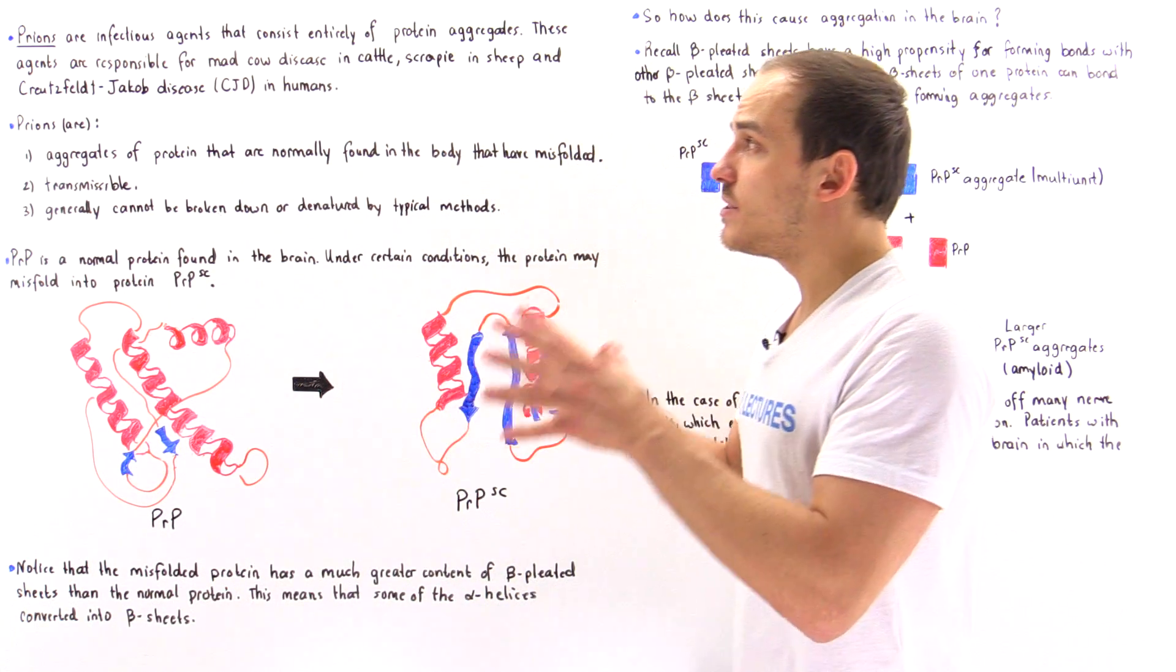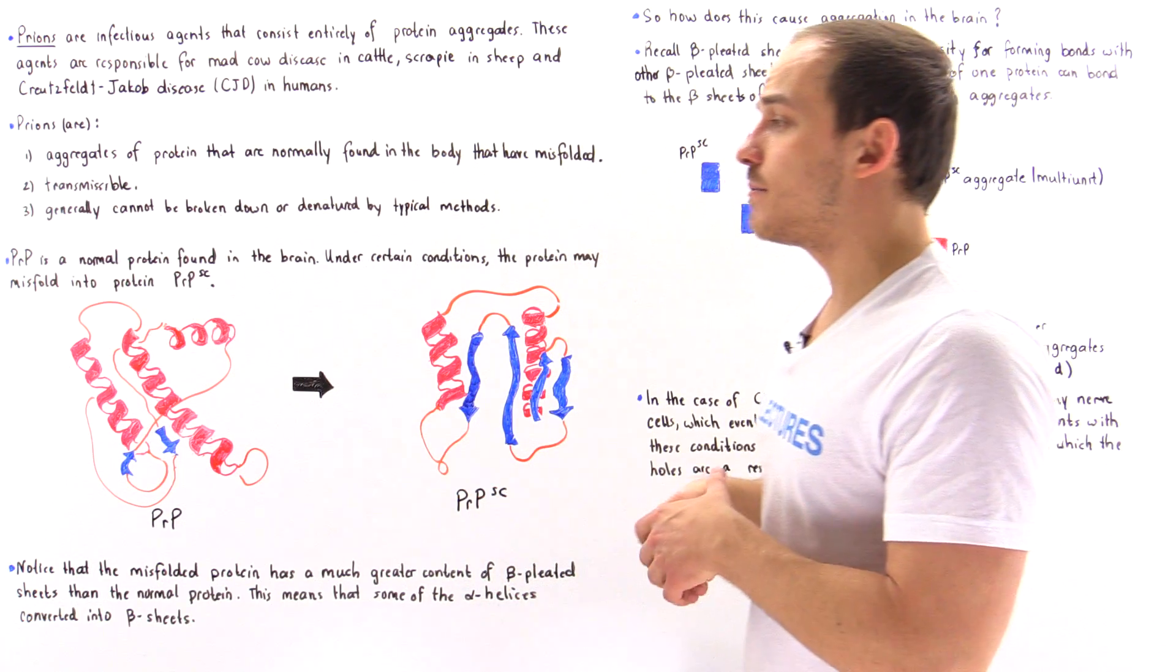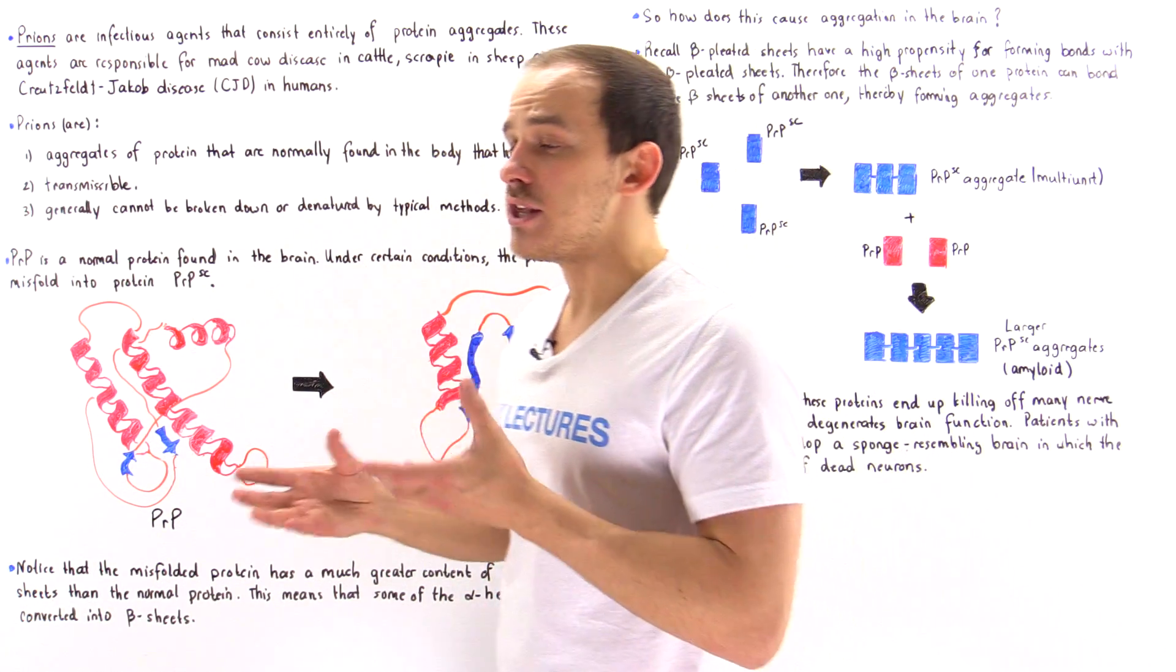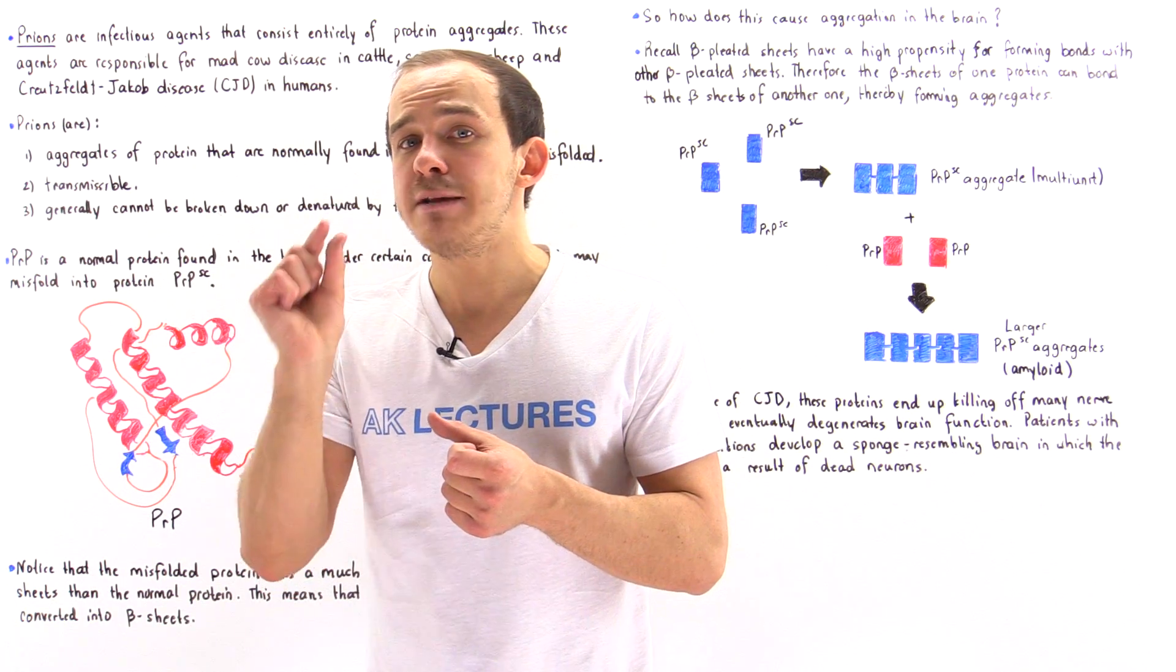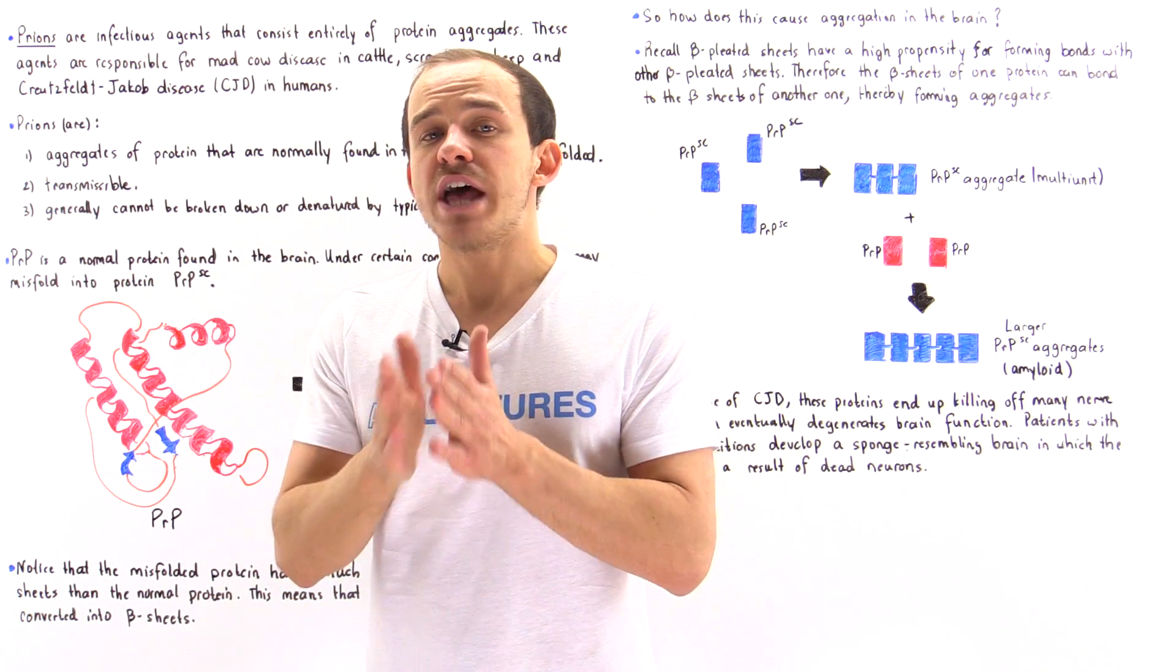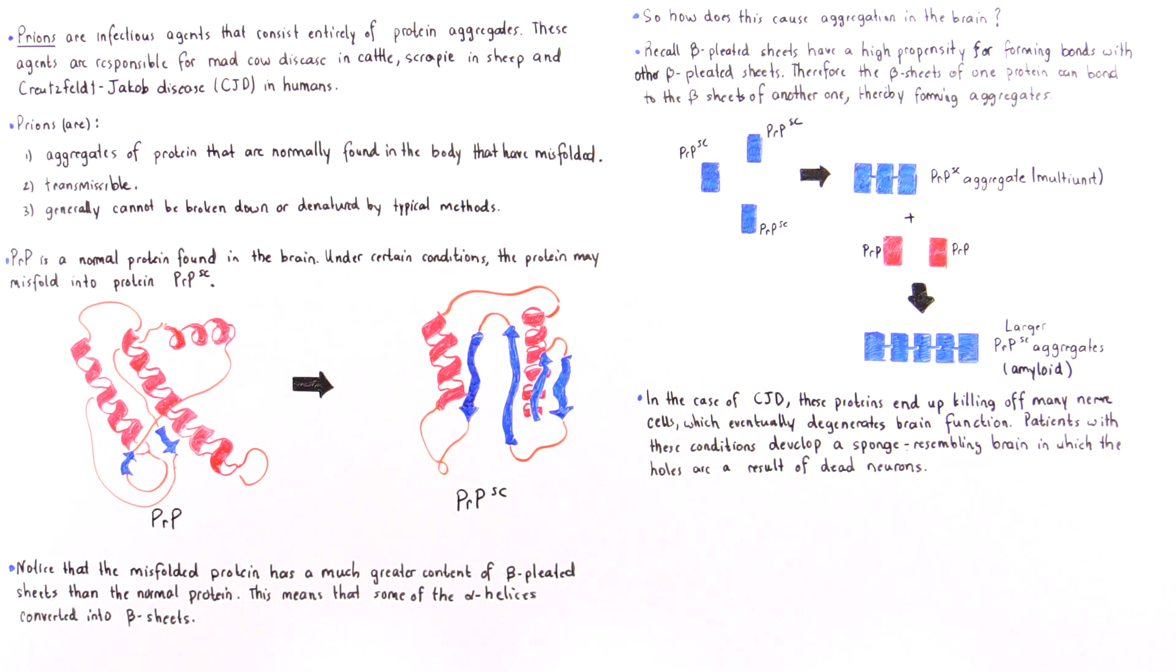If we examine the brain of an individual that has Creutzfeldt-Jakob disease, we'll see that the brain will resemble a sponge in the sense that it will contain many holes. Those holes are a result of the fact that many nerve cells have died because these aggregates have killed off those cells.